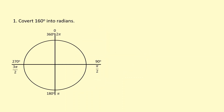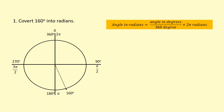We're going to convert 160 degrees into radians. So 160 is around here somewhere. The equation we're going to use: you take the angle and divide it by 360, then multiply it by the equivalent of 360 degrees in radians, which is 2 pi. That gives us 8 over 9 pi, which is 2.79 radians.